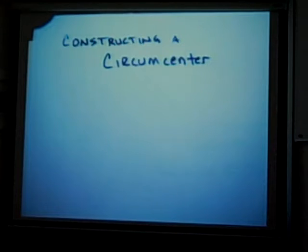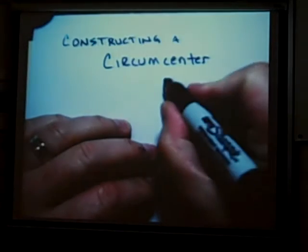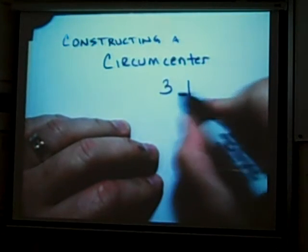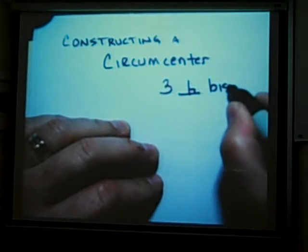We're now going to construct another center of a triangle called a circumcenter. This is a point of concurrency that results from three perpendicular bisectors.